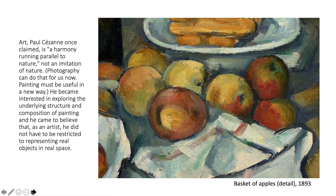Now let's step back a little bit. Paul Cézanne once claimed that art is a harmony running parallel to nature, not an imitation of nature. He's living in a time when photography exists and fully understands that photography can do that for us now — photography can imitate nature, represent nature. Painting must be useful in a new way, he thought. He became interested in exploring the underlying structure and composition of painting, and he came to believe that as an artist, he did not have to be restricted to representing real objects in real space.